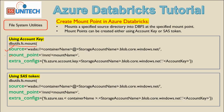The command is asking for three required input parameters. The first is the source, which includes the container name and the storage account name. The second is the mount point name. The third is the extra configuration, where you add the storage account name and the account key. So the five things to fill in are: container name, storage account name, mount point name, storage account name again, and the account key.